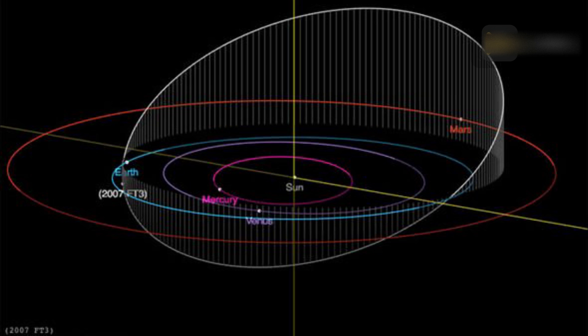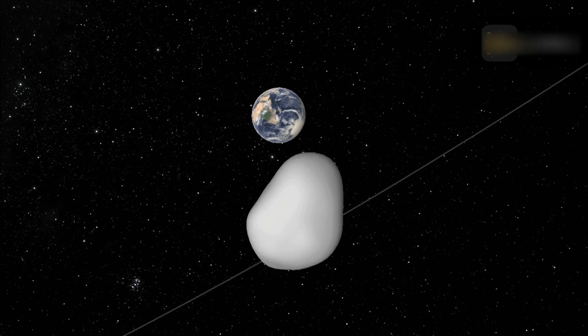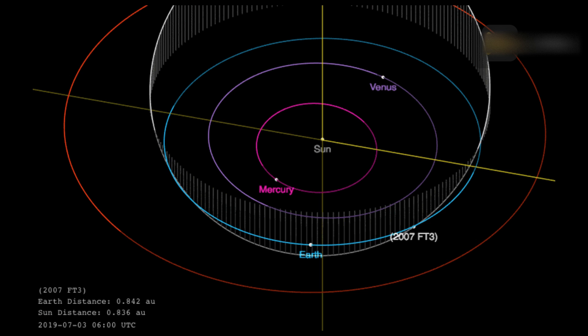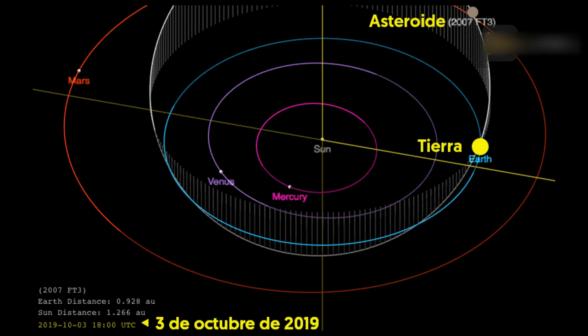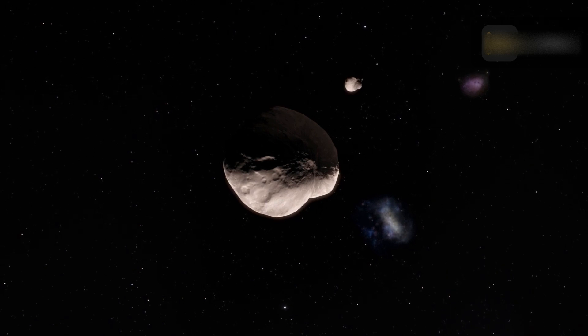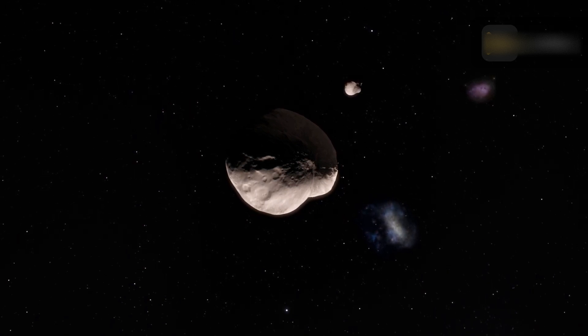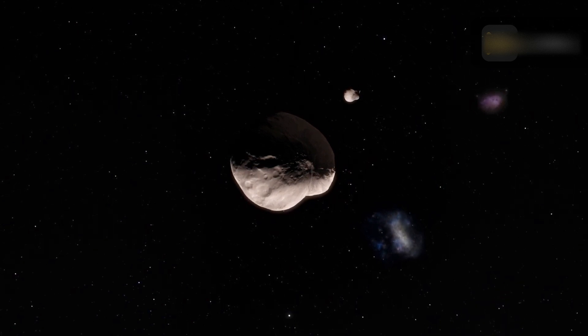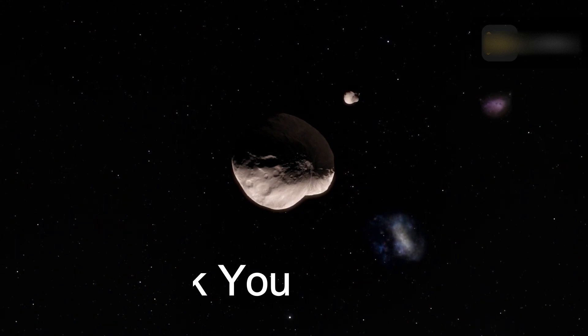2007 FT3's orbit is 0.01 AU from Earth's orbit at its closest point. This means that there is a wide berth between this asteroid and Earth at all times. The truth is, asteroid 2007 FT3 is likely to pass Earth at such an extreme distance that even big professional telescopes at major observatories won't be able to detect it this October. How far will it be at its closest distance? Preliminary estimates indicate asteroid 2007 FT3 will pass on October 3, 2024, at almost 360 times the Earth-Moon distance. That's many millions of miles, an enormous distance.